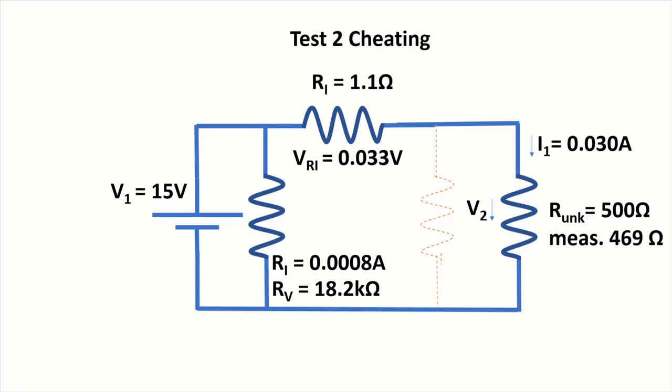So anyway, here's the second test. And we have a 500 ohm resistor now, but its actual measured value is 469. So that makes it a bit more interesting.